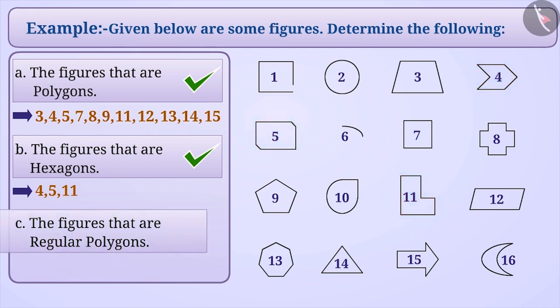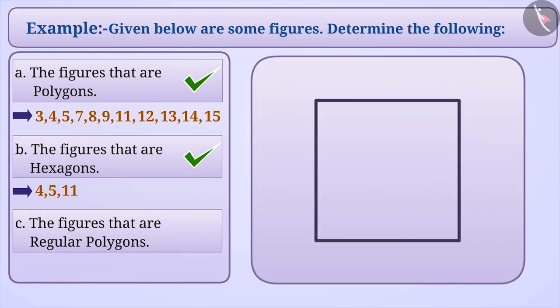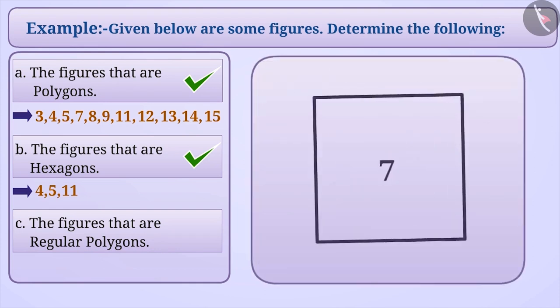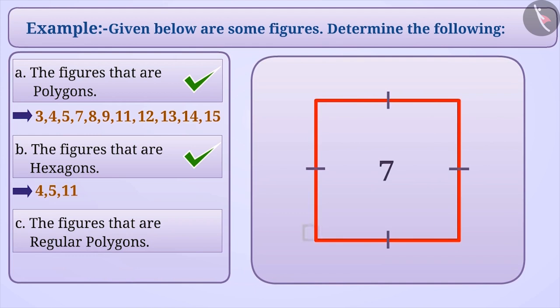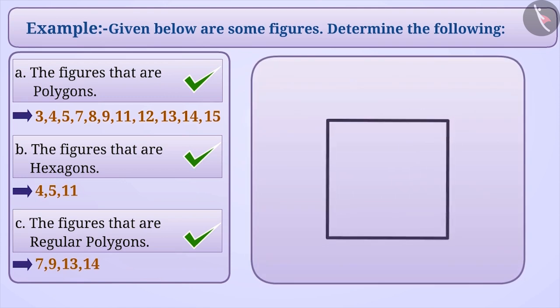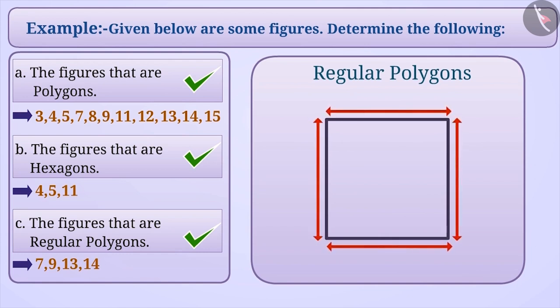Now let's determine those figures which are regular polygons. A polygon with all sides equal and all the angles equal is called a regular polygon. Here, if we look at figure 7, then it seems that all its sides are equal and all its angles are equal. So, it can be called a regular polygon. Similarly, if we talk about the figures 9, 13 and 14, then they also appear to be regular polygons. Note that whether or not a figure is a regular polygon can be determined only when its sides and angles are equal.